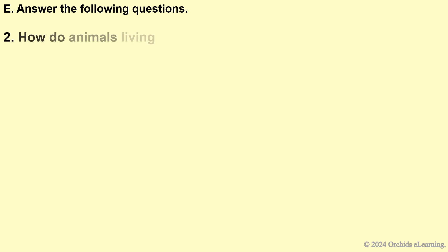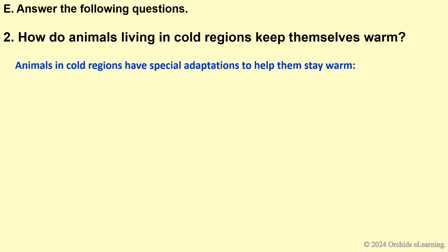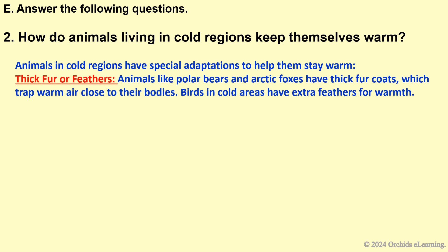How do animals living in cold regions keep themselves warm? Animals in cold regions have special adaptations to help them stay warm, such as thick fur or feathers. Animals like polar bears and arctic foxes have thick fur coats which trap warm air close to their bodies. Birds in cold areas have extra feathers for warmth.